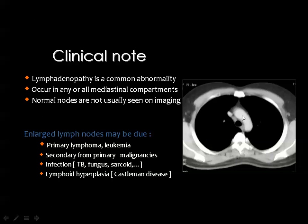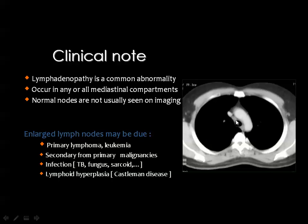A slightly enlarged lymph node posterior to the superior vena cava — the retrocaval lymph node — should not be considered pathological unless there is clinical evidence of disease. If the patient has a known primary malignancy, lymphoma, or sarcoidosis, consider it. But if this is a routine chest CT or checkup examination with no complaints, it can be ignored, as this is the only lymph node allowed to appear this way and still be considered within normal limits.